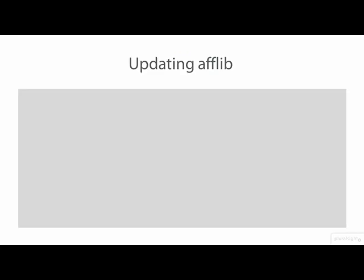Before we begin the demo, we need to know how to update AFFLib on Kali Linux. We can see the installed version of AFFLib by running any AFF command with a capital V flag. Affinfo is a good one to use. The latest version of AFFLib is 3.7.6, so the AFFLib installed on Kali 1.1.0 is old and should be updated.